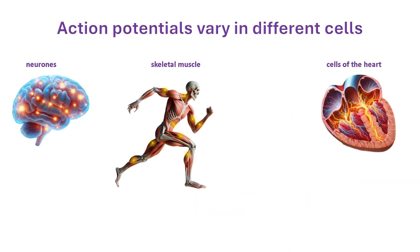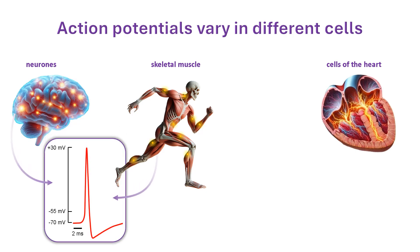Before going further, you should be aware that action potentials can vary in size and shape, depending on the cell type and the function they perform. The action potentials recorded from neurons and skeletal muscle are actually very similar. Note their speed — the whole event is over in a couple of milliseconds. That is essential for their function. In the case of neurons, information in the form of action potentials is relayed along a cell and from one cell to another at lightning speed, enabling the brain and peripheral nerves to respond and communicate immediately. Similarly, skeletal muscle must react instantly to stimulation so that you can make fast movements.